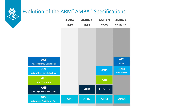In 2010, the AMBA 4 specifications were introduced starting with AMBA 4 AXI4, and then AMBA 4 ACE in 2011. ACE extends AXI with additional signalling, introducing system-wide coherency. This system-wide coherency allows multiple processors to share memory and enables technology like ARM's big.LITTLE processing.